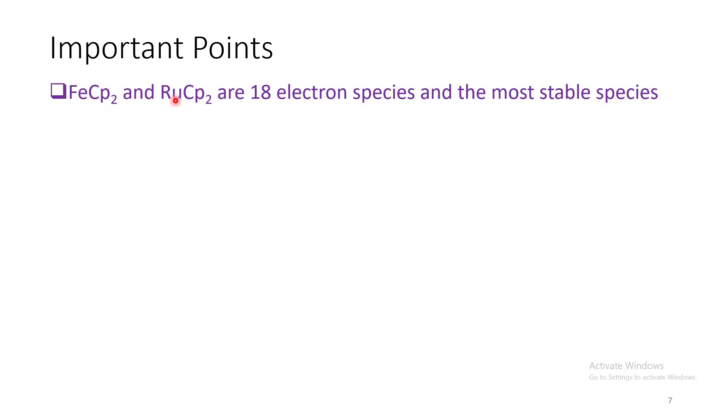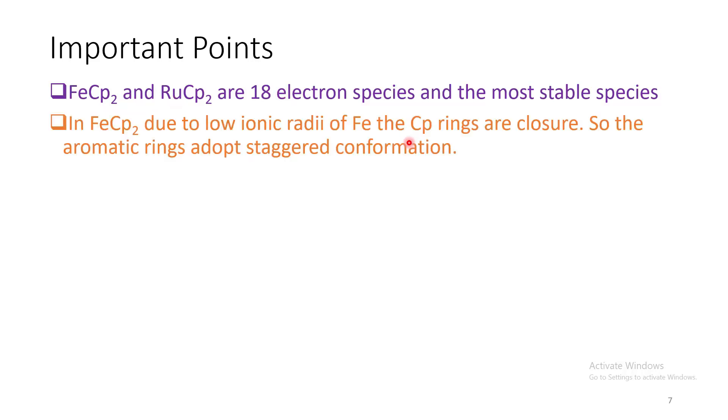As ferrocene and ruthenocene are 18 electron species, they are the most stable ones. Now in ferrocene, due to low ionic radii of iron, the Cp rings are very close. So the aromatic rings adopt staggered conformation to avoid the steric interactions. In ruthenocene, now the rings are bit far apart. So the aromatic rings adopt eclipse configuration to maximize the electron delocalization across these rings.